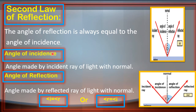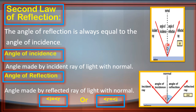Angle of Incidence वो angle है जो Incident Ray, Normal के साथ बना रही है. Angle of Reflection वो angle है जो Reflected Ray, Normal के साथ बना रही है. So Angle of Incidence is the angle made by the Incident Ray of Light with the Normal, and Angle of Reflection is the angle made by the Reflected Ray of Light with the Normal. According to Second Law of Reflection, Angle of Incidence हमेशा equal होगा Angle of Reflection کے. So Angle of Incidence is always equal to the Angle of Reflection.